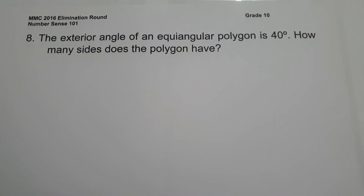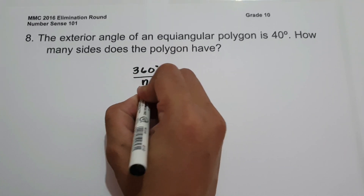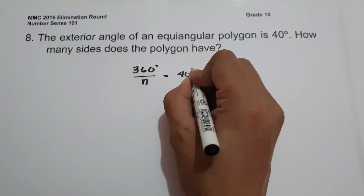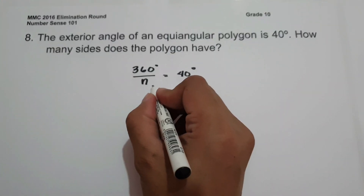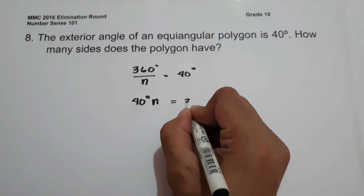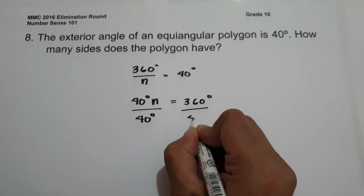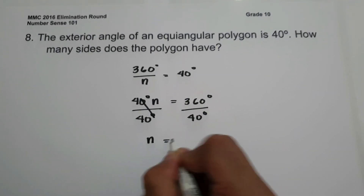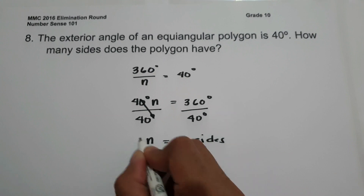For number 8: the exterior angle of an equiangular polygon is 40 degrees. How many sides does the polygon have? The formula for the exterior angle of an equiangular polygon is 360 degrees over n. Since the exterior angle is 40 degrees, the equation is 360 over n equals 40. Multiplying both sides gives 40n equals 360, and dividing by 40 gives n equals 9. So the number of sides is 9.